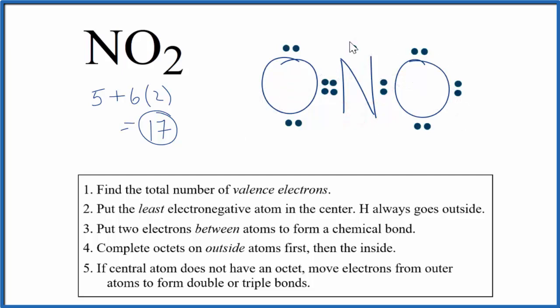So either way, this is the best Lewis structure for NO2 nitrogen dioxide. And this is Dr. B. Thanks for watching.